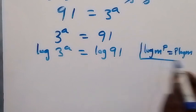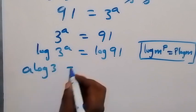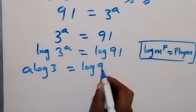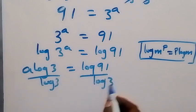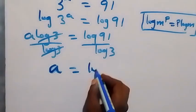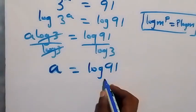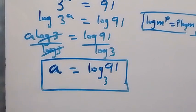When we use this, then we have a times log 3 equals log 91. Divide both sides by log 3: log 3 cancels log 3, and we are left with a, which equals log 91 over log 3 — which we can write as a equals log 91 base 3, from the change of base formula. And this is the value of a in this given problem. We can also express it as a decimal number.